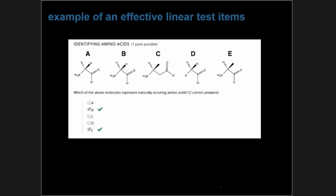Here's an example of a quite good item from a chemistry or biology class. Each response is an image — an illustration of a molecule. It's a multiple response question and the stem clearly states there are two correct answers, so students know how many to select. The distractors appear to be plausible. This is an effective linear test item that demonstrates how visual responses can be used well.